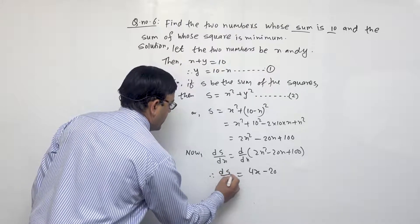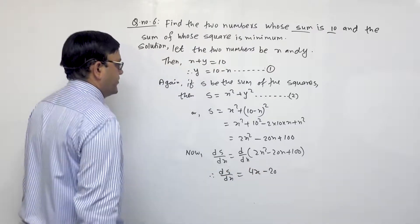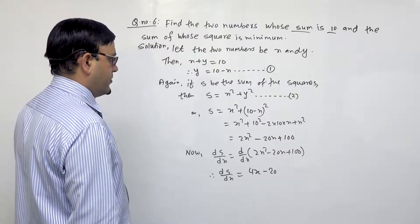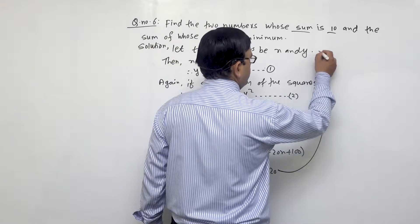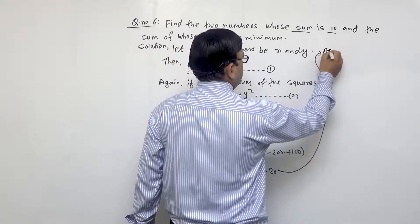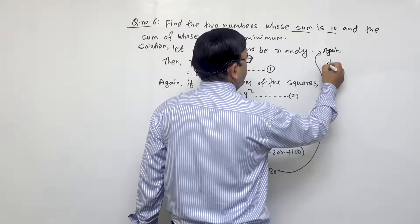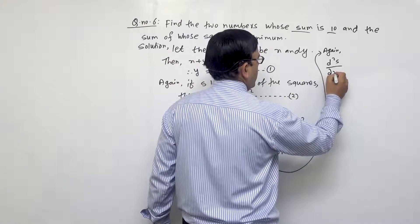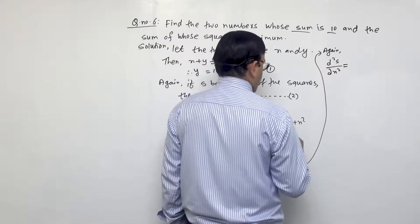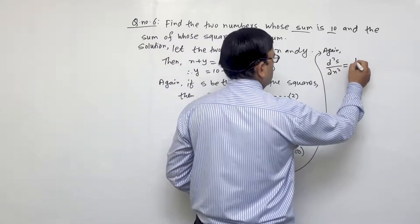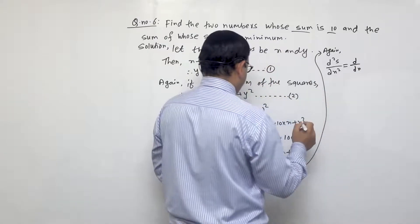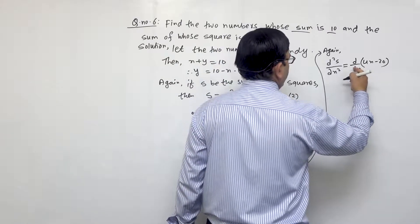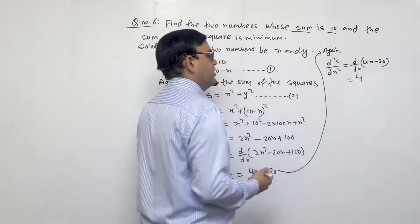Now finding the derivative of S with respect to x: dS/dx = d/dx(2x² - 20x + 100) = 4x - 20. The second derivative d²S/dx² = 4.